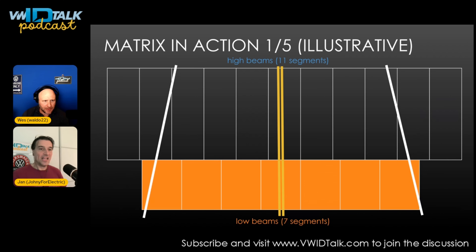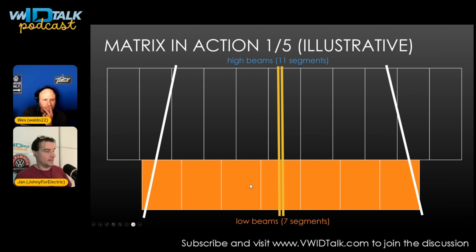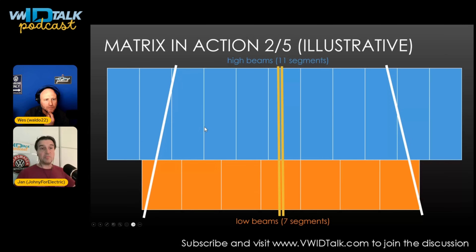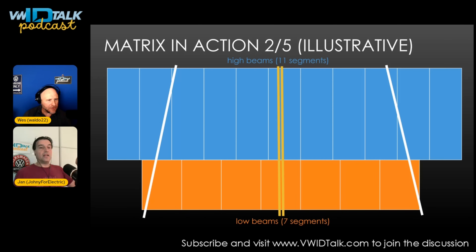We have dissected the matrix high beam before — link in the video. This illustrative video shows how the matrix function works. Inside the light, there are a number of segments: the orange bar is the low beam, which is not important. What is important is that there are 11 high beam LEDs. Today, when you're driving and turn on the high beams, you turn on all 11 segments at the same time. And in auto mode, it will either turn them all on or turn them all off.